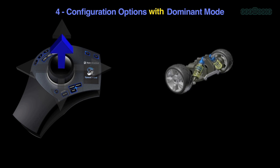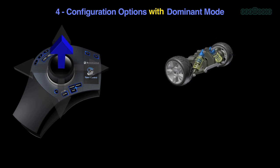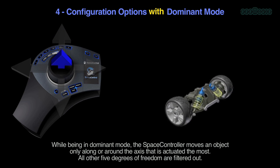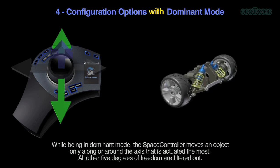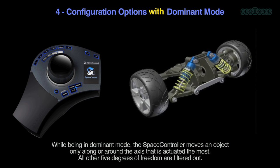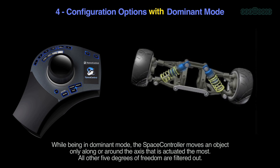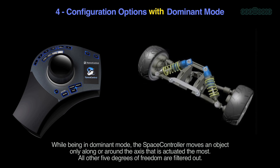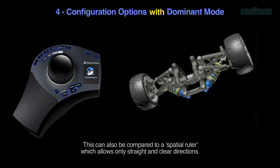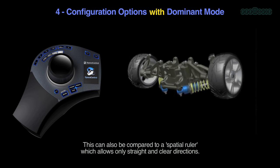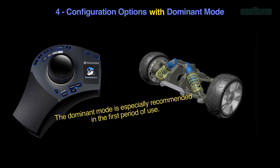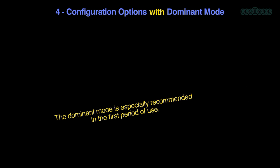Configuration options — dominant mode: while in dominant mode, the Space Controller moves an object only along or around the axis that is actuated the most; all other five degrees of freedom are filtered out. This can be compared to a spatial ruler which allows only straight and clear directions. Dominant mode is especially recommended in the first period of use.